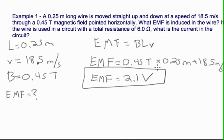In the second question, we're asked if the wire is used in a circuit with a total resistance of 6.0 ohms, what is the current?